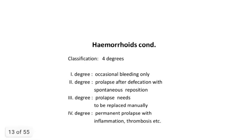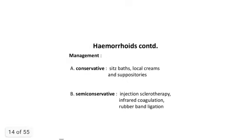Classification: First degree — occasional bleeding only. Second degree — prolapse after defecation that spontaneously repositions. Third degree — prolapse that needs to be replaced manually. Fourth degree — permanent prolapse with or without inflammation, thrombosis, and other complications.